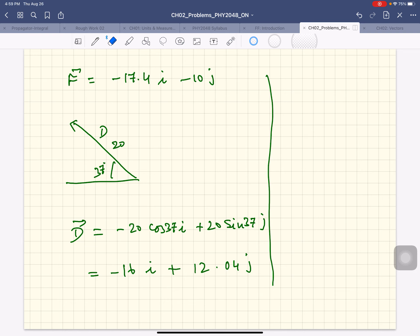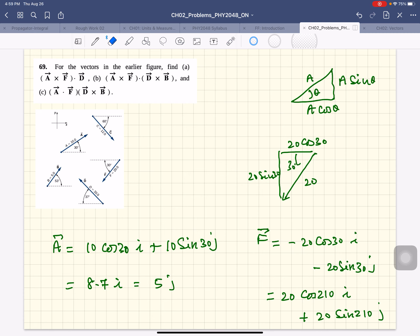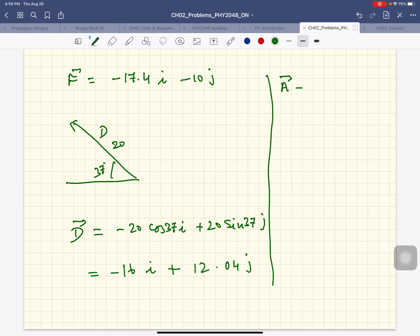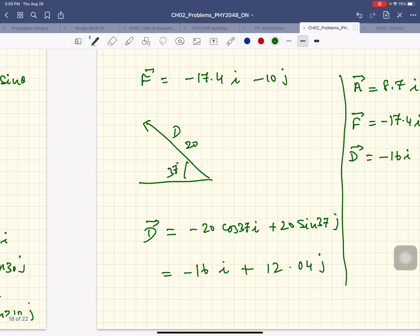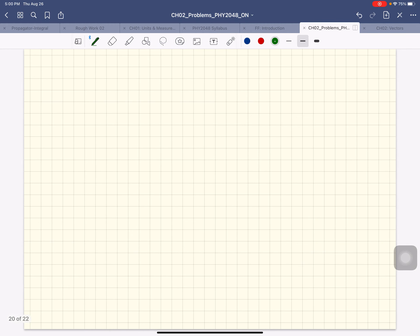So what is it that we want to find? Let's gather our results. A is 8.7 i plus 5 j. So all we've done is we've found the components of the vectors—we found the vectors in terms of the components. And now we can do the problem. What is it that we want to find? A cross F dotted with D.